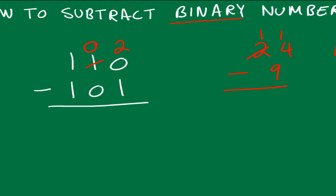So we're borrowing the base. Every unit is worth the base. So 2 minus 1 is 1, 0 minus 0 is 0, 1 minus 1 is 0. So the answer is 1, and that's what we should get since this was 6 and this was 5. 6 minus 5 is 1.